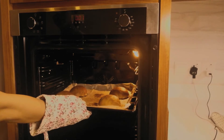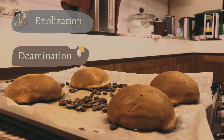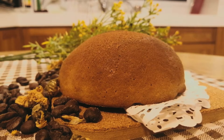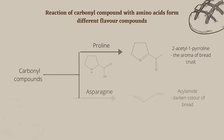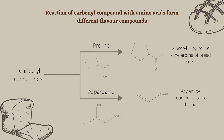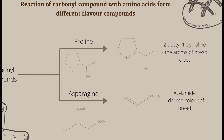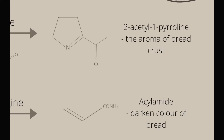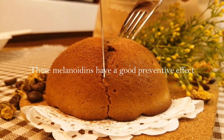These rearrangement products then undergo enolization, deamination, dehydration, and fragmentation, giving rise to products containing one or more carbonyl groups. These carbonyl compounds react with amino groups and other components, resulting in the formation of many different flavor compounds, as well as melanoidins, which are brown nitrogenous polymers.